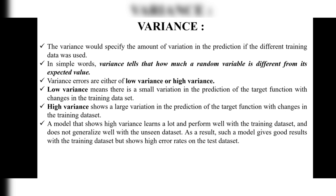Low variance has only a small variation because we have only a little amount of data. In high variance, we have a large amount of data sets, so it shows a large variation in the prediction of the target function. A model that shows high variance learns a lot and performs well with the training data set, but does not generalize well with unseen data. As a result, it gives good results with training data but shows high error rates on test data.